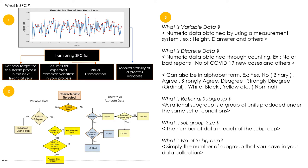In our day-to-day work, we observe a lot of variation in our processes. This is a time-status plot showing the up and down of a selected parameter over time. To determine whether this variation is a common cause (expected) or special cause (unexpected), we need to use SPC. This is the main reason why people use SPC — to monitor the stability of a process variable.